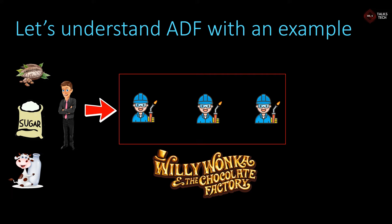Once the raw materials arrive in the factory, the workers use them to make the chocolate, and they must work in a specific order. The first worker cleans all the raw materials. Once done, the cleaned raw materials are sent to the second worker, who mixes them all together to make the actual chocolate. The chocolate is then sent to the third worker, who wraps it.